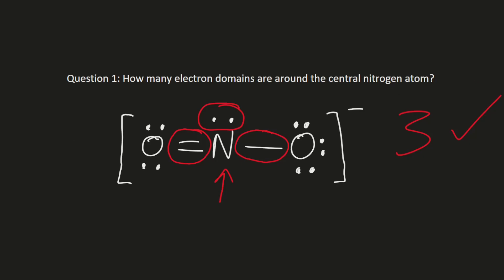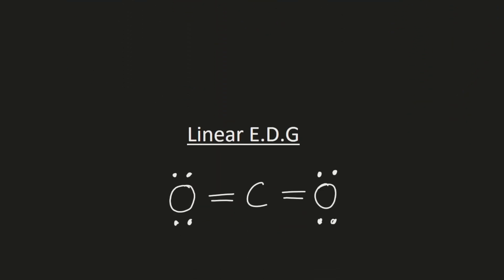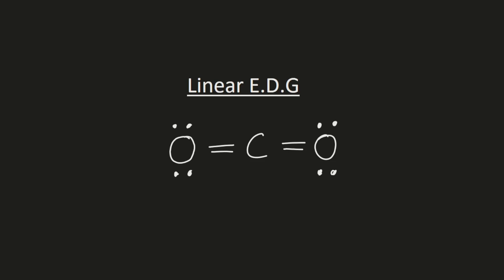Let's move on to finding electron domain geometry, which basically involves counting the number of electron domains around the central atom, and then finding the electron domain geometry name for that number. If there are two electron domains around the central atom, the electron domain geometry is called linear. For example, CO2 has two electron domains around the central atom carbon, so it has a linear electron domain geometry. You can remember this because the Lewis structure forms a line.